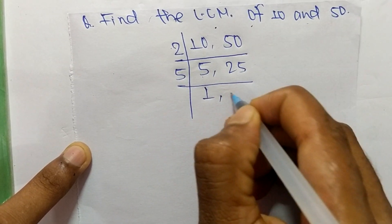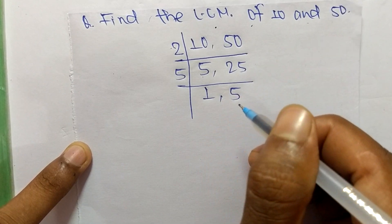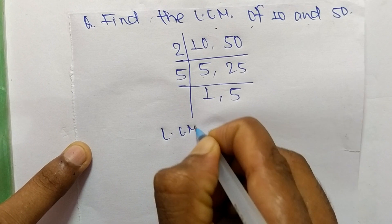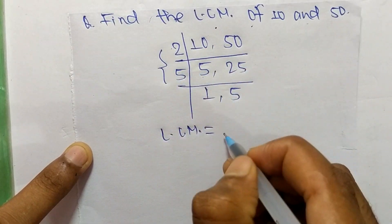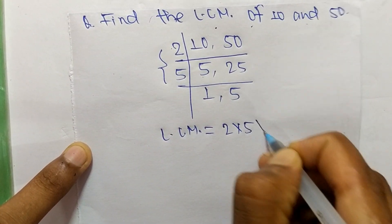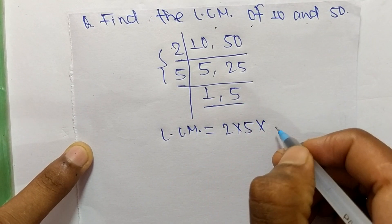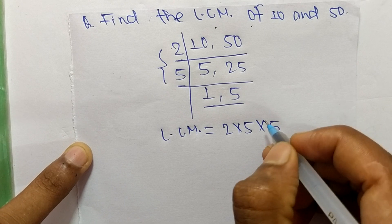Its LCM is equal to—from this part it is 2 times 5, and from this part we have 1 and 5, but we take here only 5 and we neglect 1.